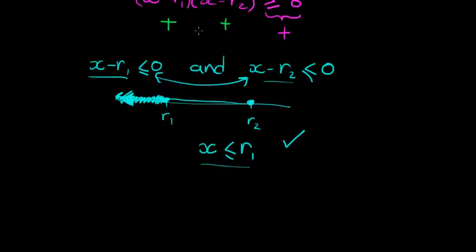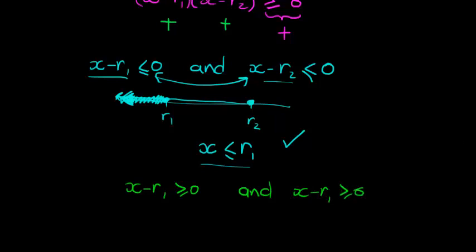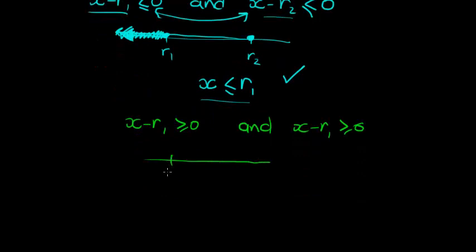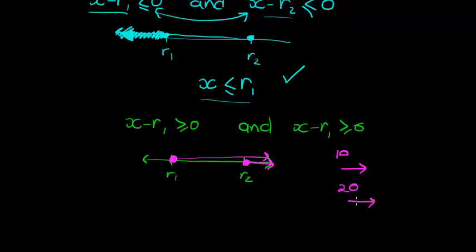The second case is where both factors are positive: (x − r1) ≥ 0 AND (x − r2) ≥ 0. Drawing this: x ≥ r1 and x ≥ r2. That's like saying I'm older than 10 and older than 20 — if you say you're older than 20, you're already implying you're older than 10. So I don't need to mention both; I can just say x ≥ r2.